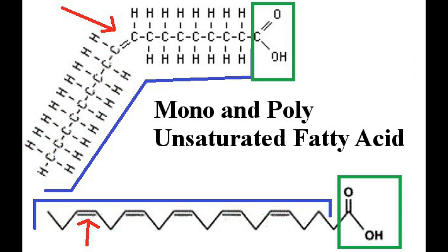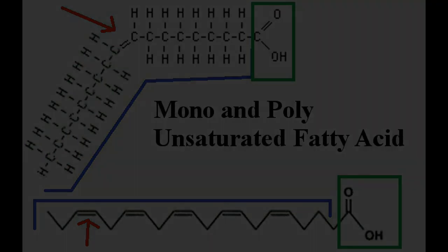What makes this an unsaturated fatty acid are the carbon-carbon double bonds, depicted by the red arrows. Each black line represents a bond between two atoms, so when you see two it represents two double bonds. The top fatty acid is monounsaturated because it has one carbon-carbon double bond. The bottom is a polyunsaturated fatty acid because it has more than one carbon-carbon double bond — in this case it has five, though that number can vary.